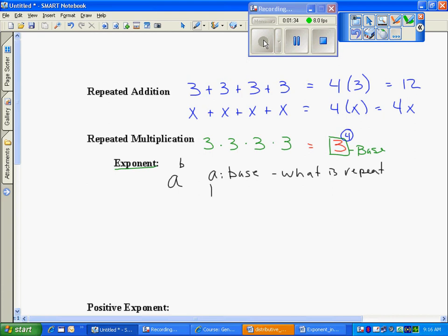And the little number b, whatever that might be, is going to be the exponent, and that tells me how many times to repeat the multiplication. And we'll show some examples of that here in just a minute.